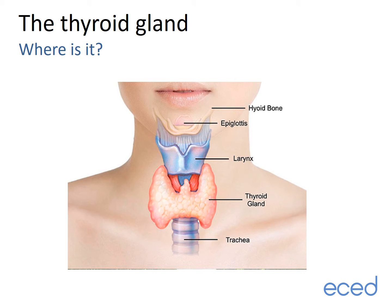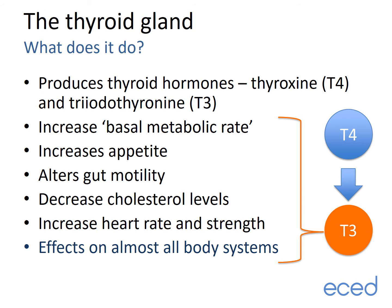The thyroid gland sits at the front of the neck just below the Adam's apple. It's made up of two lobes on either side of the windpipe, also known as the trachea. The thyroid produces two main hormones: thyroxin, also known as T4, and triiodothyronine, or T3.